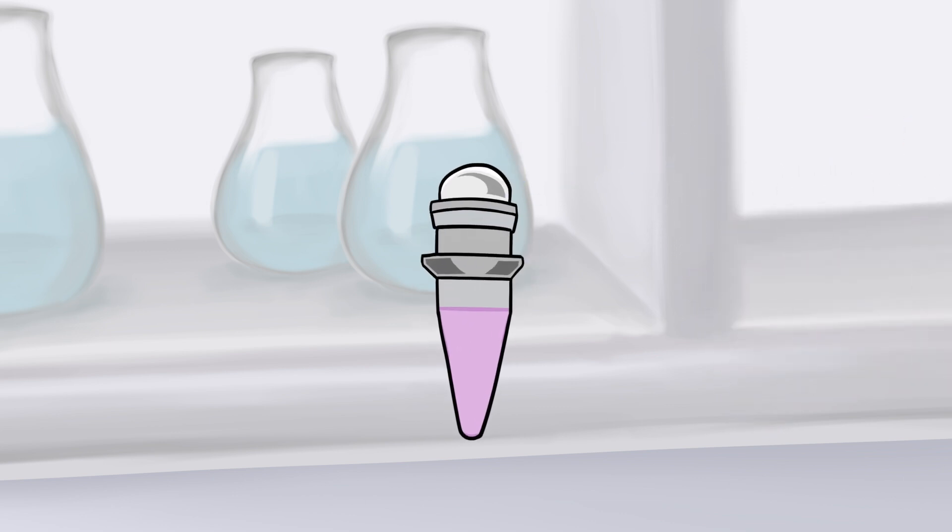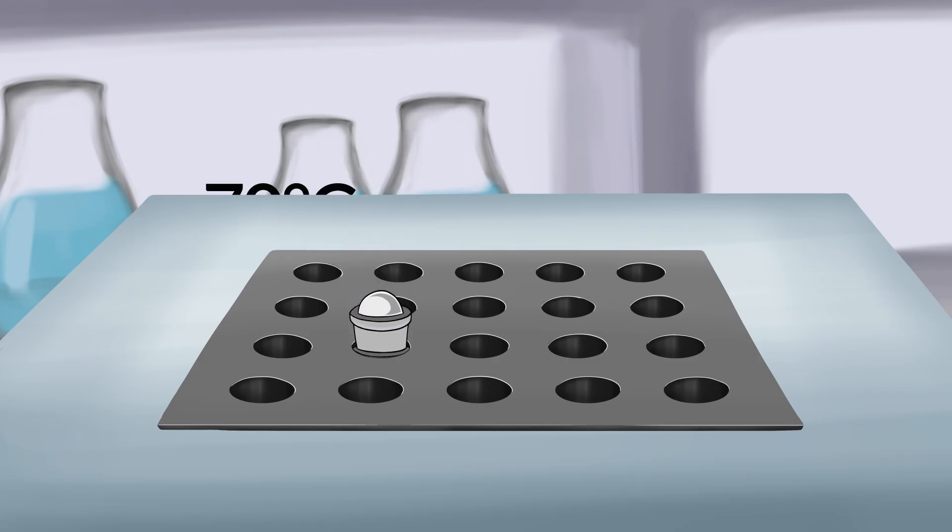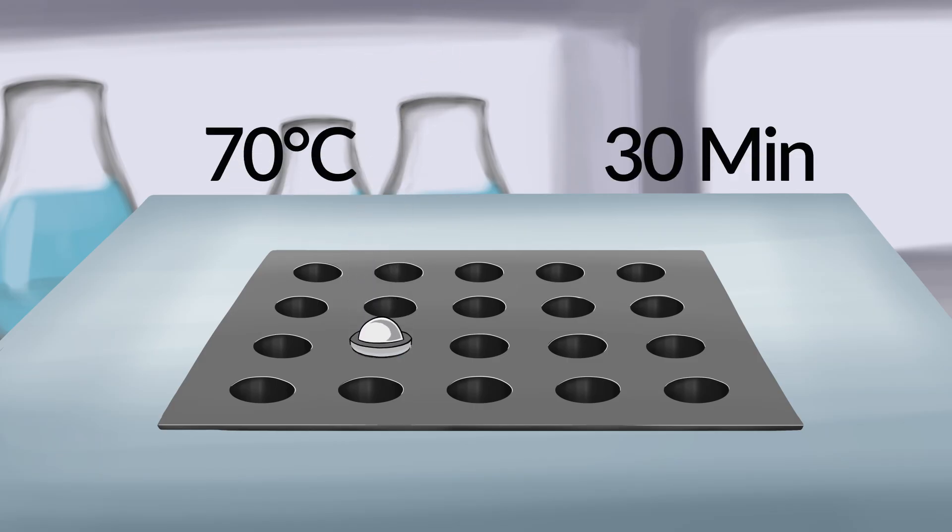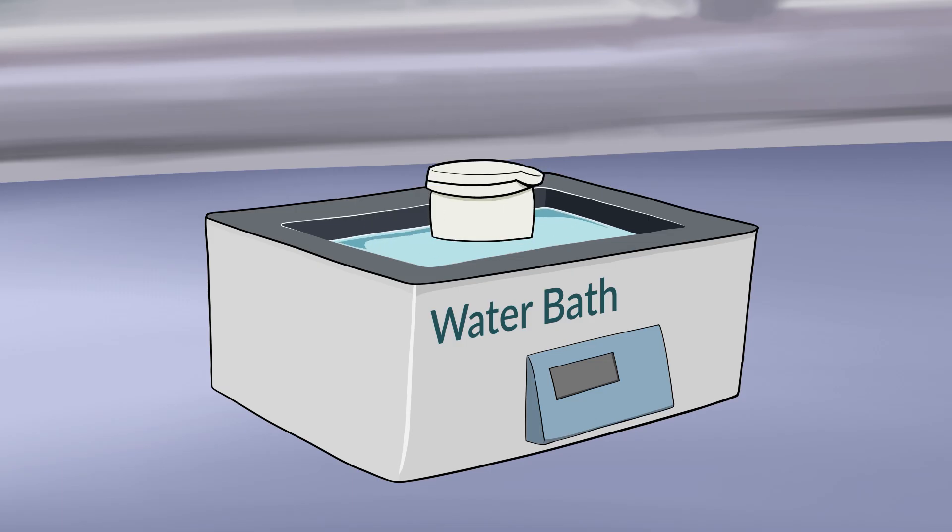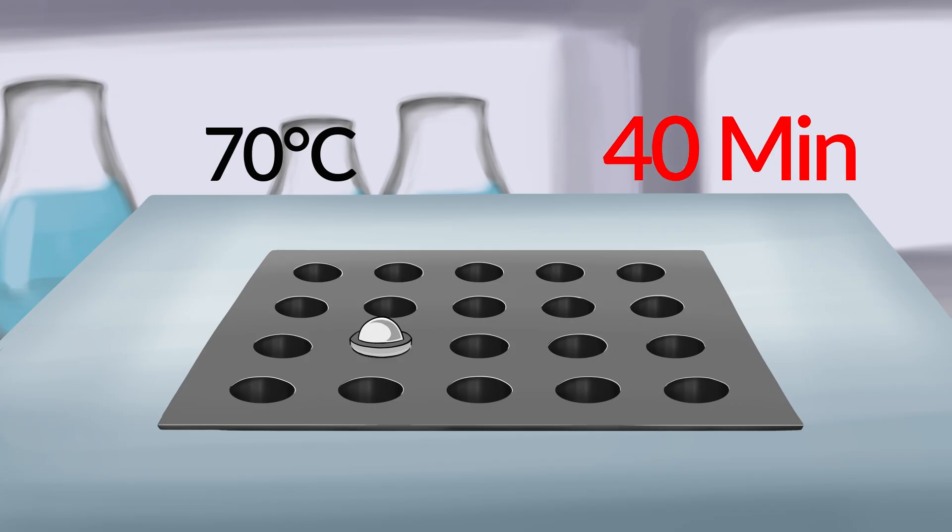Now that everything is prepped, it is time to test for any mycoplasma. Incubate the reaction mix tube at 70 degrees Celsius for 30 minutes using a thermocycler or heat block. Water bath is not recommended as it might introduce more contamination from the environment. Do not incubate for more than 40 minutes.